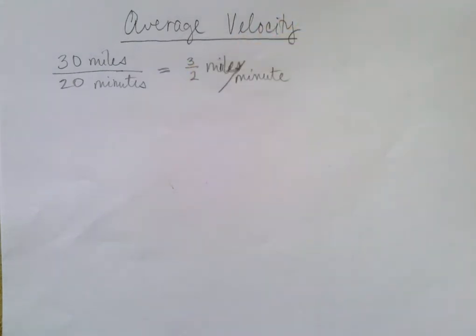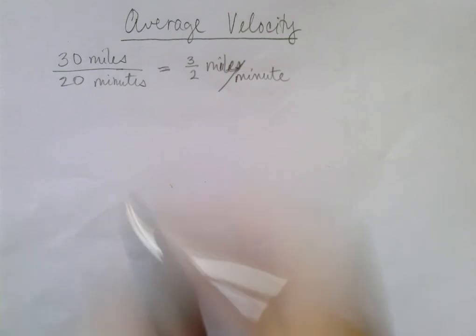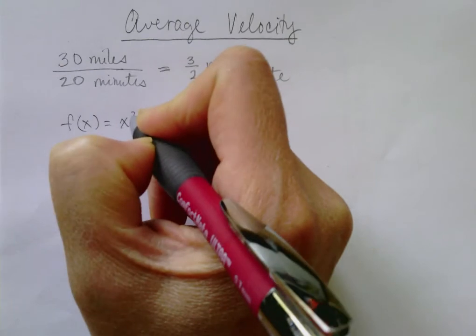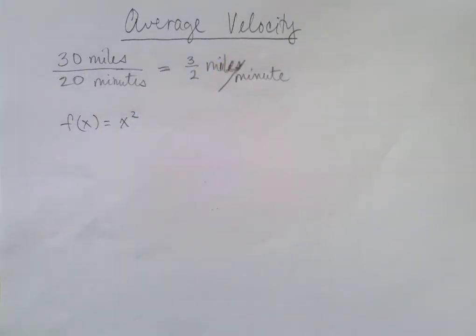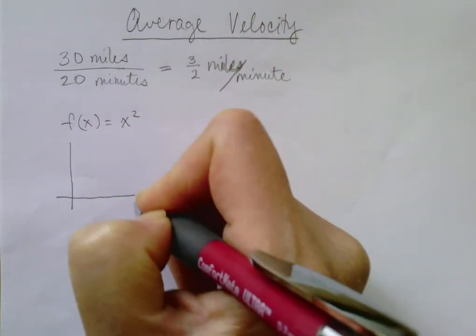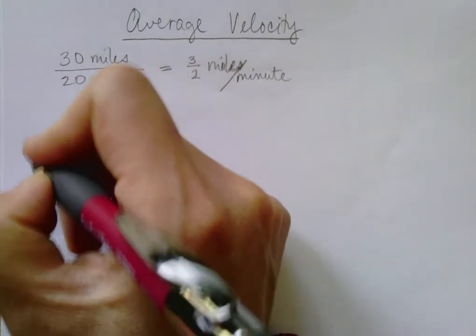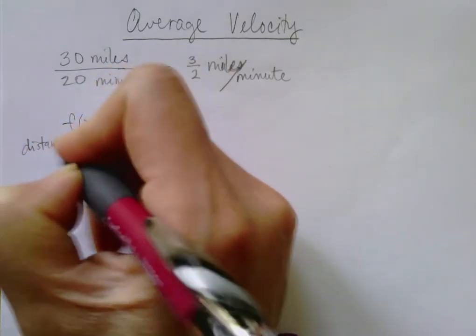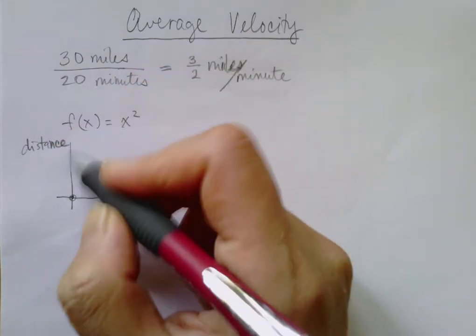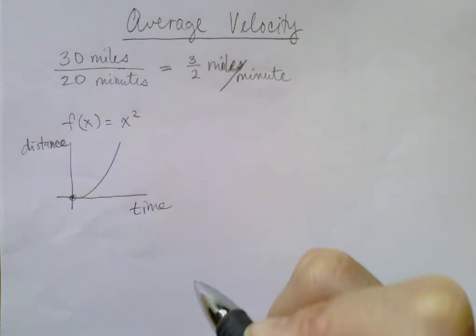Alright, so that should be pretty clear. Now let's model it a bit more closely with math. Suppose that the function f of x equals x squared describes your path over time, specifically the distance from a given point to somewhere else, right?